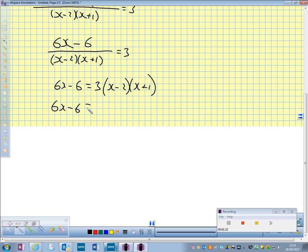6x minus 6 equals 3, and then we need to do FOIL here: x squared minus x minus 2.